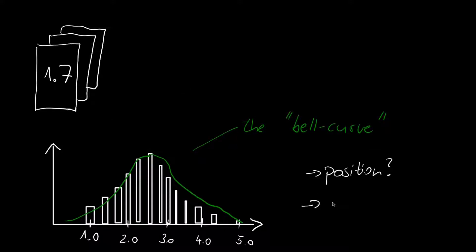But how can we model this bell shape with its position and scale? Welcome to the Gaussian or normal distribution.